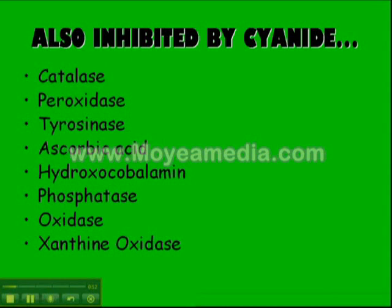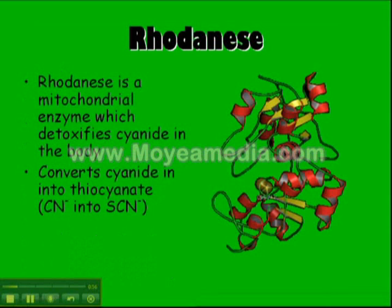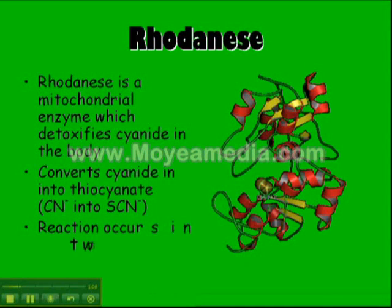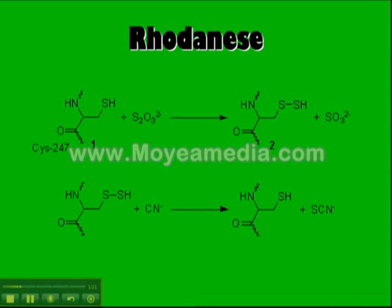Something else I will be discussing is detoxifying enzymes. One of these is rhodanese. Rhodanese is a mitochondrial enzyme which detoxifies cyanide in the body. It converts cyanide into thiocyanate in a two-step reaction.